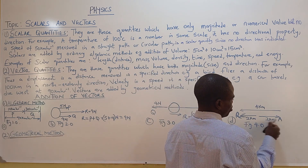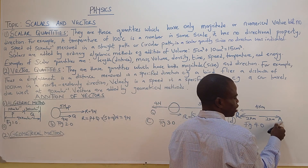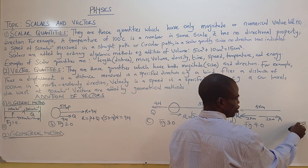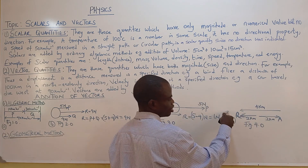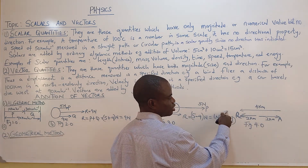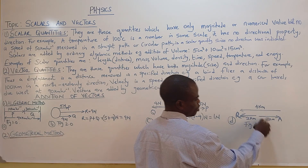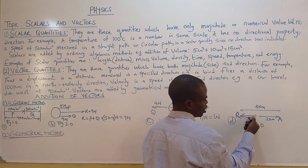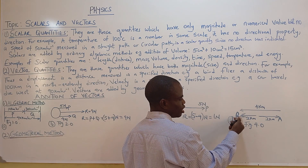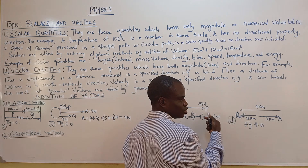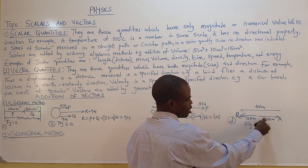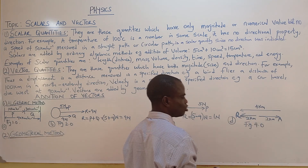The man moves 2 kilometers due east, then changes direction and moves 4 kilometers due west. You subtract: 4 minus 2 equals 2. The resultant arrow points due west to show that 4 kilometers is greater than 2 kilometers.